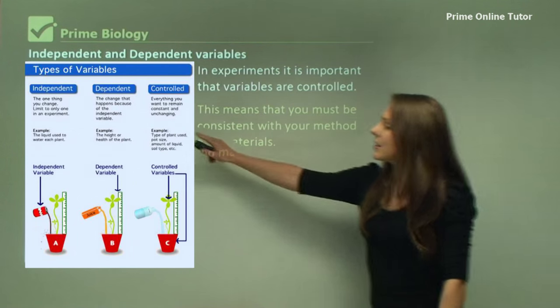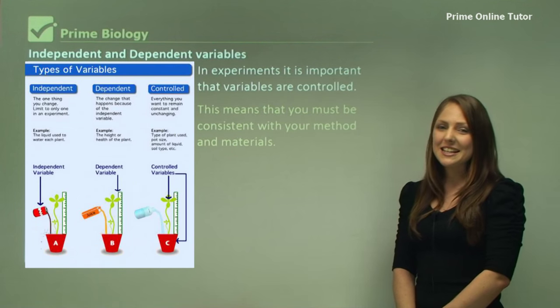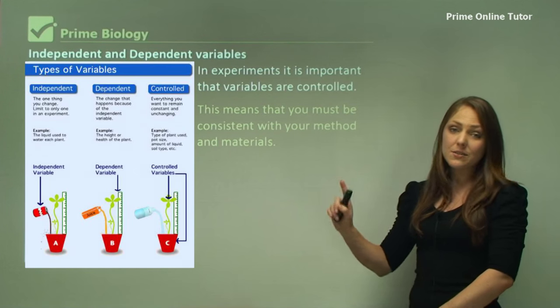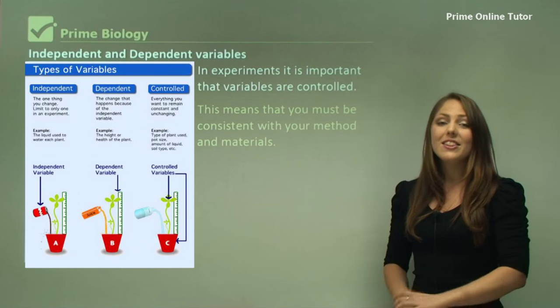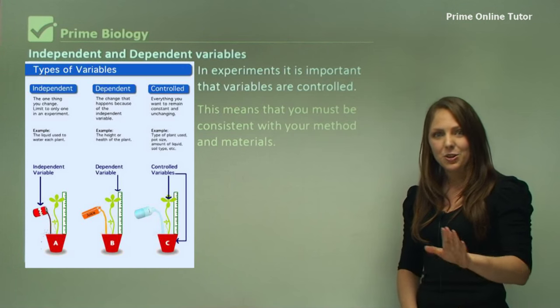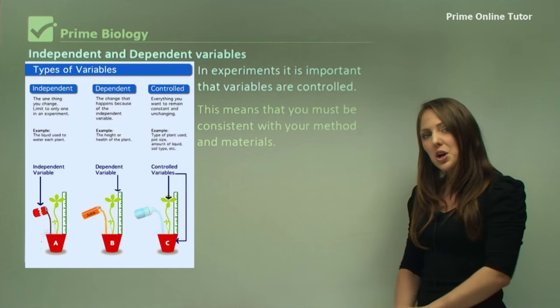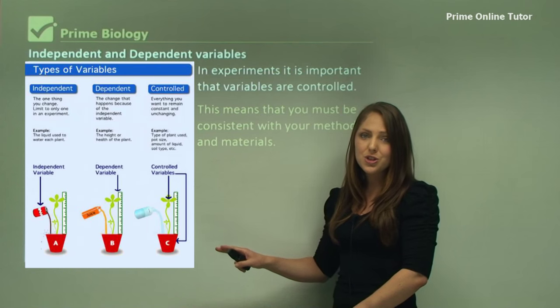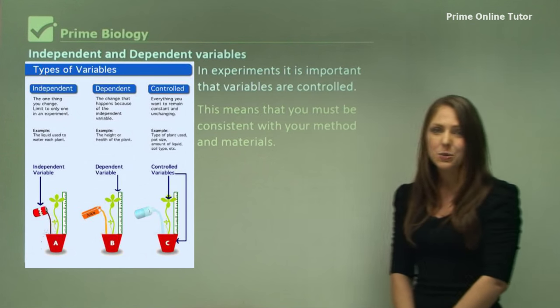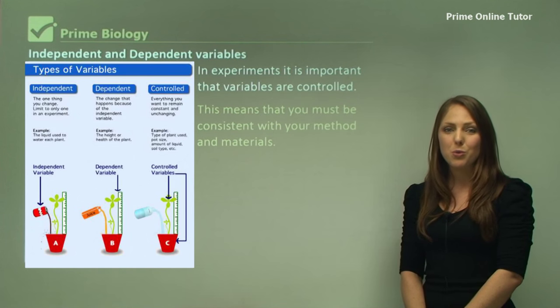In this experiment here, we can see we've got one different type of plant species. The independent variable is something that you change. In this experiment, we're giving the plant Coke, orange juice, and water as different liquids to see their effect on plant growth.